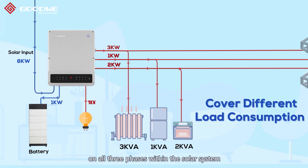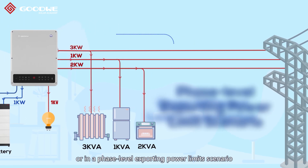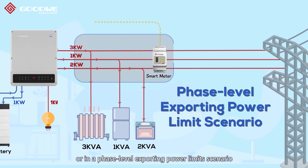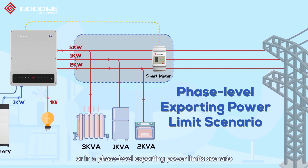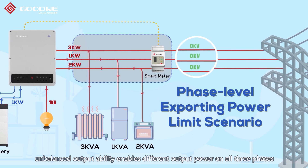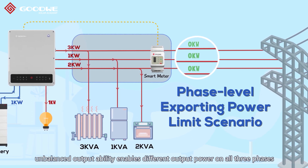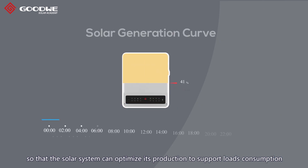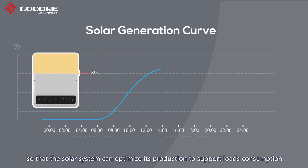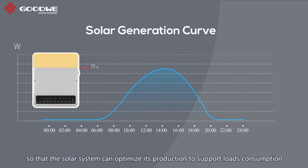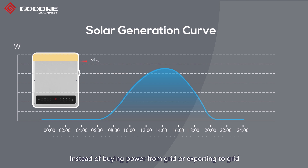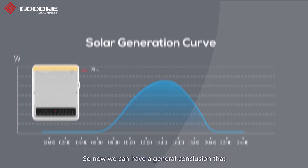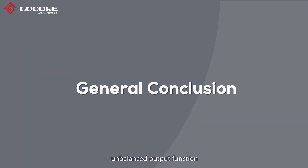So that solar production could cover different load consumption on all three phases. Within the solar system, or in a phase-level exporting power limit scenario, unbalanced output ability enables different output power on all three phases, so that the solar system can optimize its production to support load consumption instead of buying power from the grid or exporting to the grid.